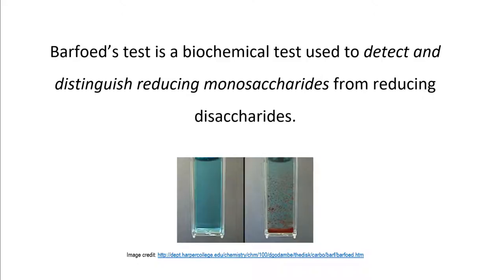Barfoed's test is a biochemical test very similar to the Benedict's and Fehling's tests. However, unlike these two tests, which can only detect the presence of reducing sugars in general, the Barfoed's test can distinguish reducing monosaccharides from reducing disaccharides. It is therefore used to detect the presence of monosaccharides in a sample.